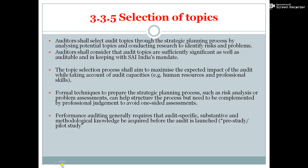How will the selection of topics work? First, you can select topics through proper planning — identify what potential topics are, what risks are, and what problems are, then choose topics that are important. The aim is to maximize your audit impact. You can use formal techniques, strategic planning processes, and problem assessment, but you can also add your professional judgment. Performance auditing is always specific and substantive, and you need methodological knowledge.